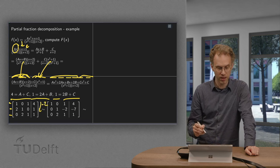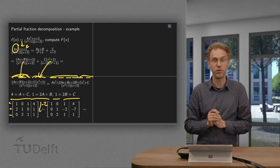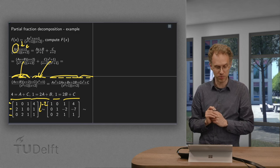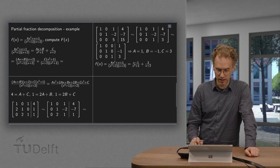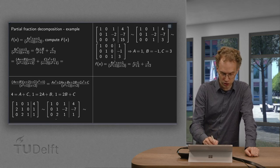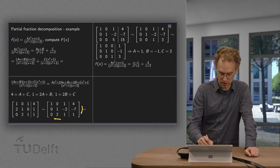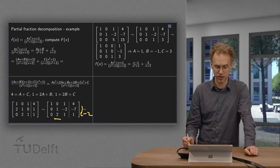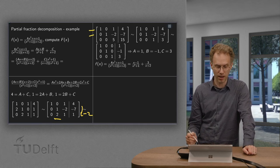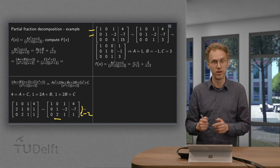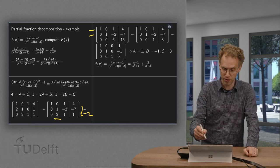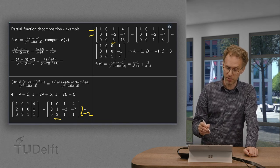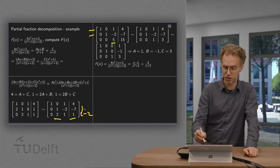Minus 2 over here. First and last row remain the same. And the second row becomes 0, 1, minus 2, minus 7. And then we get rid of this 2 by subtracting 2 again. So first and second row now remain the same. And for the third row we get 0, 0, subtract 2 times minus 2. So add 4 we get a 5. Subtract minus 14. So add 14 gives us a 15.